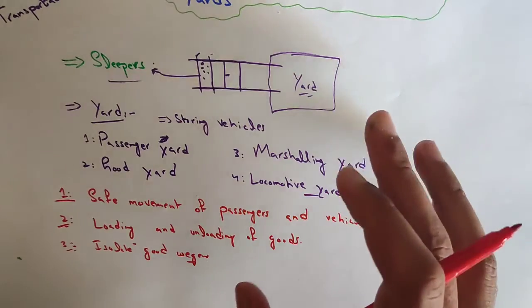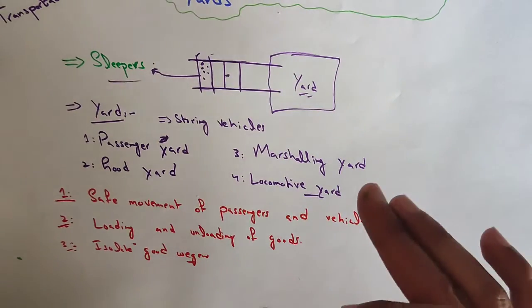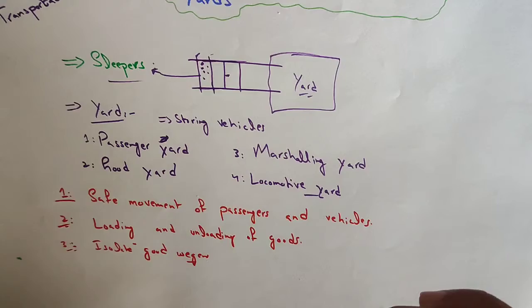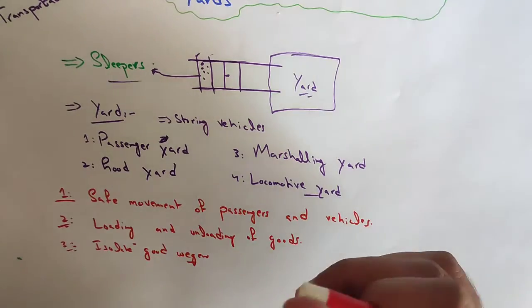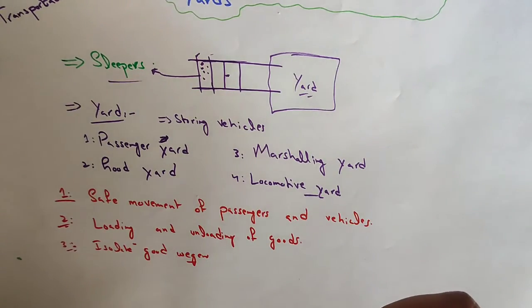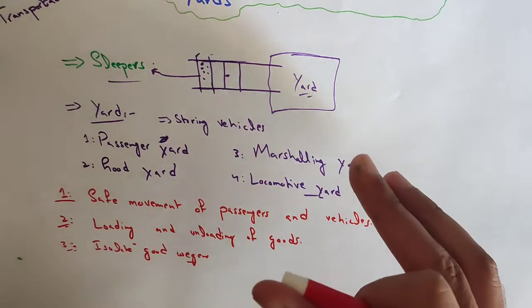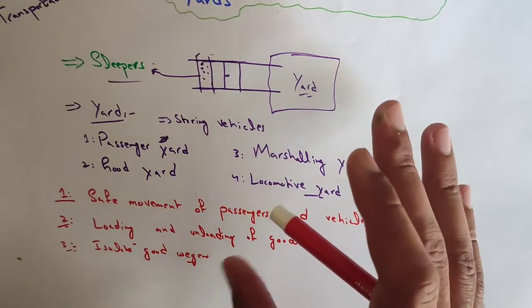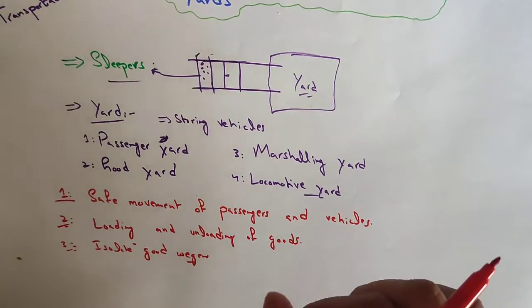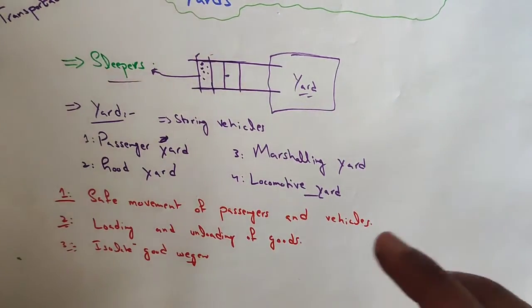Reception sidings are used to receive incoming trains. Sorting siding is used during shunting operations. Each siding is allotted with wagons bound for a particular direction, sorted out according to their respective destination. These are the main features of marshaling yards.